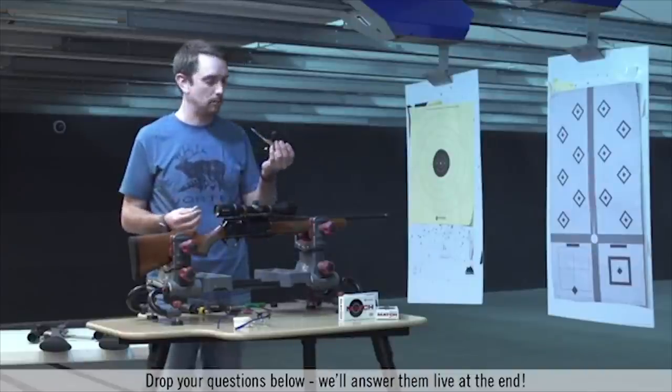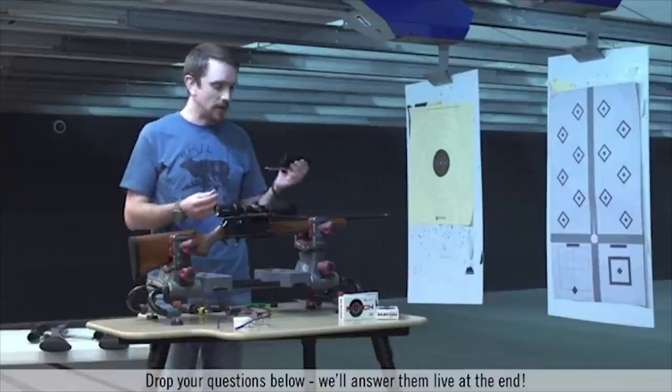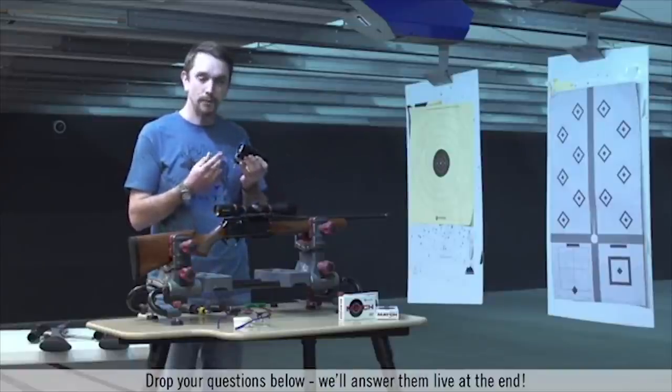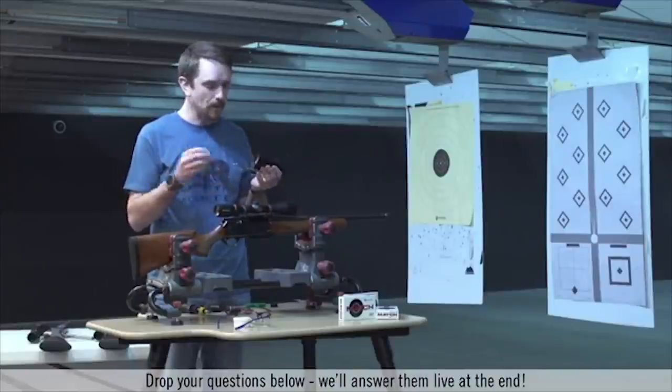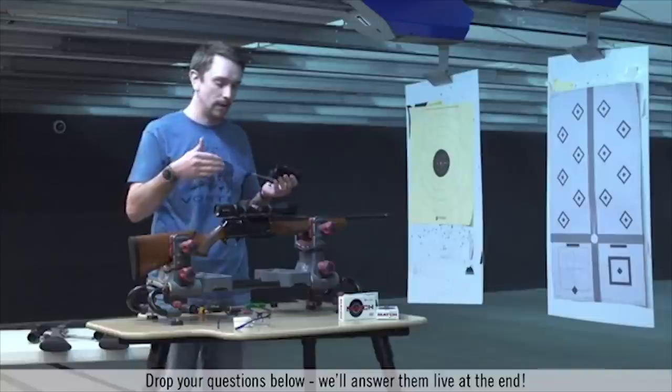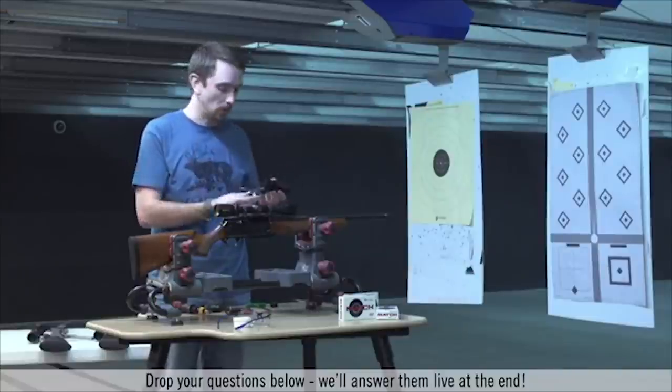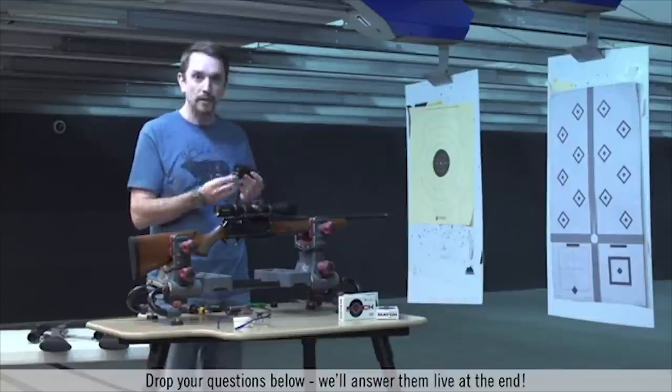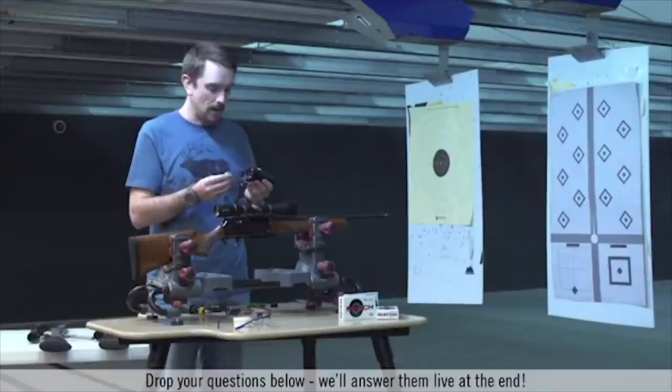And then a collimator type bore sighter. So also goes in the end of the muzzle using an expanding mandrel to fill that muzzle. And inside of this, there's a grid and we use that to align the reticle and the rifle scope with the rifle's bore. This is pretty old tech. These have been around for a long time. Very handy. They're not terribly expensive.